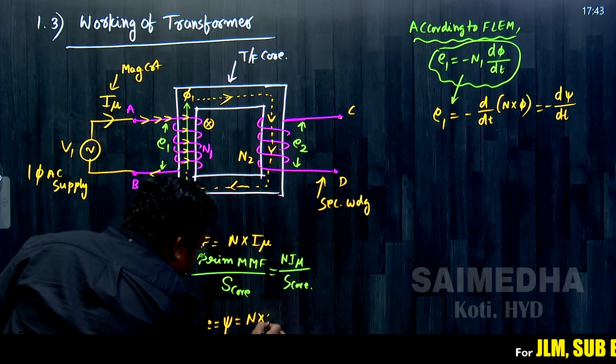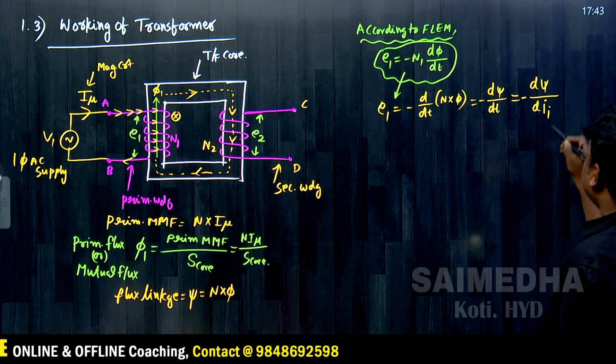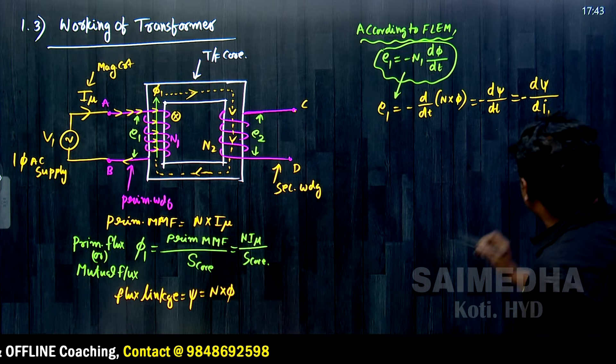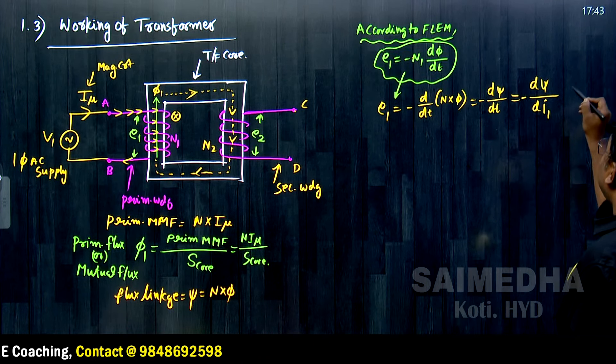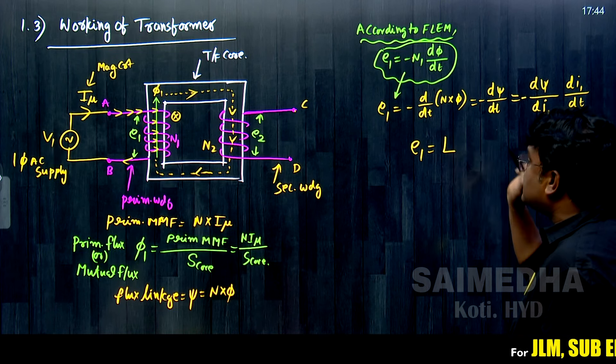E1 = −(d(flux linkage)/dt). Taking the derivative of flux linkage with respect to current gives dφ/di, and multiplying by di1/dt, we get E1 = −L · (di_mu/dt). Here, flux linkage divided by current is the inductance L. This is another form of the induced EMF equation, expressed in terms of the inductance of the coil.